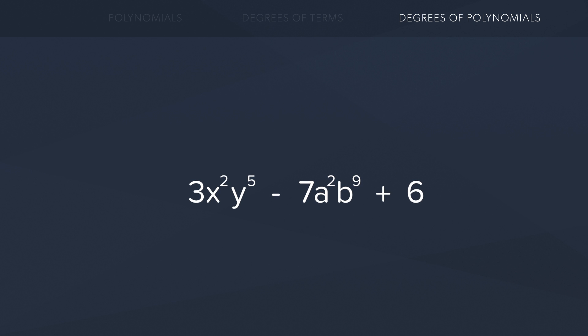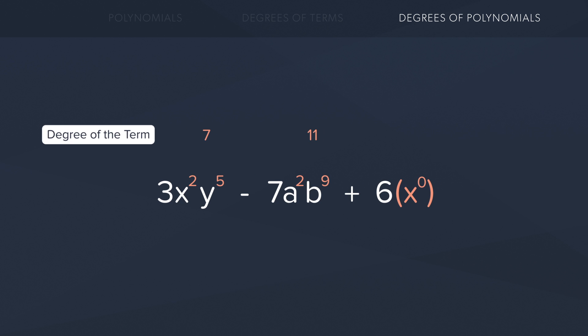So here's an example of a polynomial. As you can see there are three different terms. Now take a look at the degree of each of the terms. Our first term has a degree of 7. Our second term has a degree of 11. And of course our last term has a hidden degree here of 0. So it's pretty obvious that we can see the middle term has the highest degree. And this is exactly how you choose the degree of a polynomial.